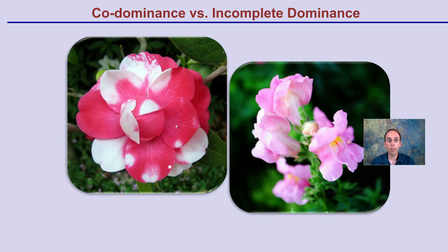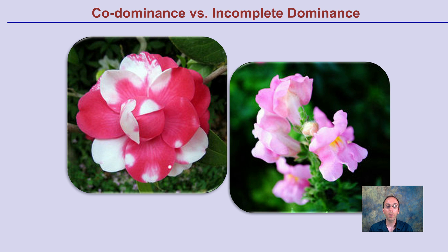This picture is a great combination showing both co-dominance and incomplete dominance. With co-dominance, we see the red and white both being fully expressed. With incomplete dominance, the red and white blend together to make pink. Be mindful of comparing and contrasting these two — both are examples of non-Mendelian genetics.